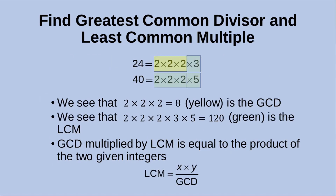The yellow box represents the GCD of the two numbers, and the green boxes cover the numbers for the LCM of the two numbers. We can see that GCD multiplied by the LCM is equal to the product of the two given numbers. So we can derive the LCM from the given GCD: LCM equals the two numbers multiplied together divided by the GCD of the two numbers.